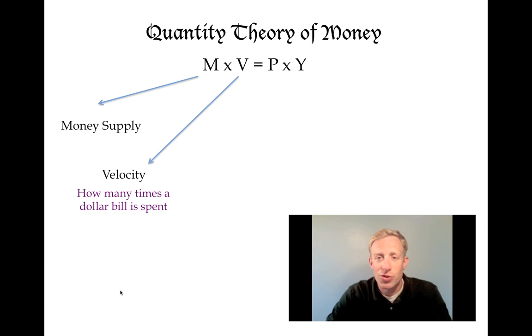On the other side of the equal sign, P is the price level and Y is the real GDP or real output level for your economy. M times V equals P times Y. That's the equation for the quantity theory of money.